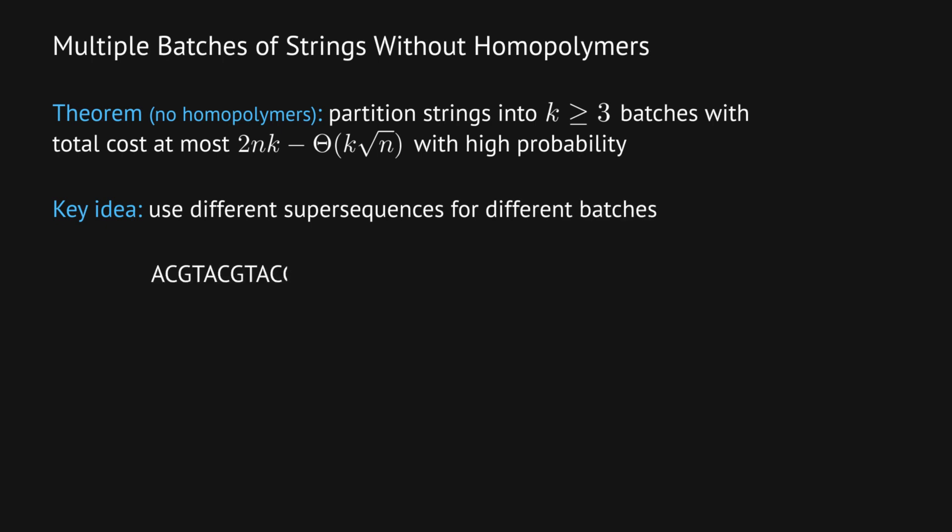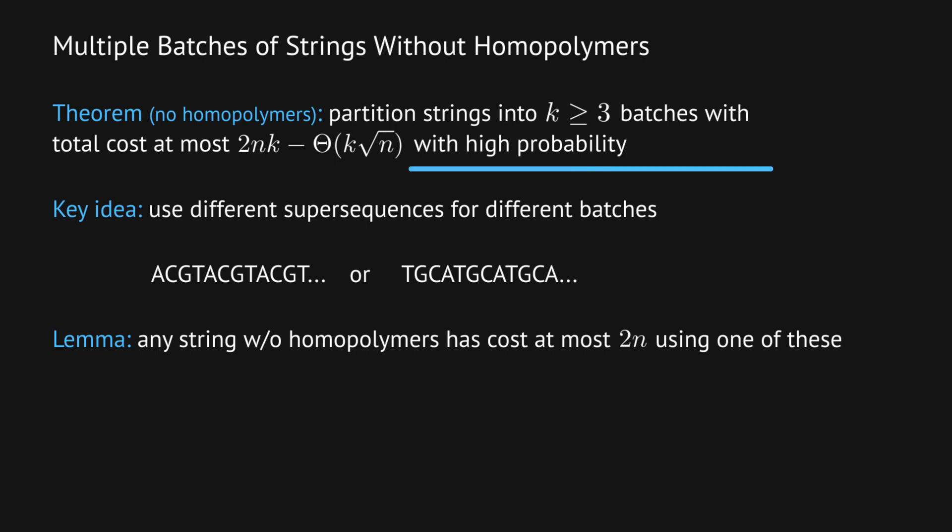Some batches use ACGT repeating and others use the reverse sequence TGCA repeating. Any string without homopolymers has cost at most 2n for one of these two options. This is nice because we don't have that extra square root term. Using the batching process and optimizing the super sequence gets us down to a total cost where we actually subtract a term from the average.